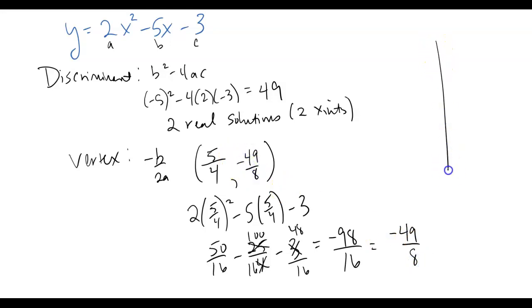So that would be my vertex. So I'm going to go ahead and start graphing because I know my vertex is 5 fourths, which 5 fourths, guys, is just a little bit over 1. And then if that's 1 and that's 2, negative 49 over 8, that's going to be somewhere around negative 6. 2, 3, 4, 5, 6. So negative 6. So that's going to be my vertex. And this graph is facing up, so I know it is a minimum.